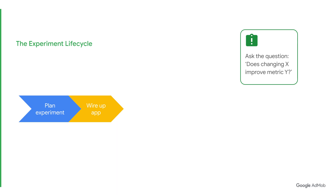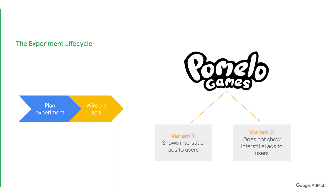Number two, wire up your app to deliver different experiment variants. In our example from Pomelo Games, they created two variants targeted to a subset of their users. One variant showed interstitial ads to users and the other did not. They needed a way to distribute the two variants out to their users. Luckily, Firebase Remote Config and Firebase A-B testing could easily do that part for them.